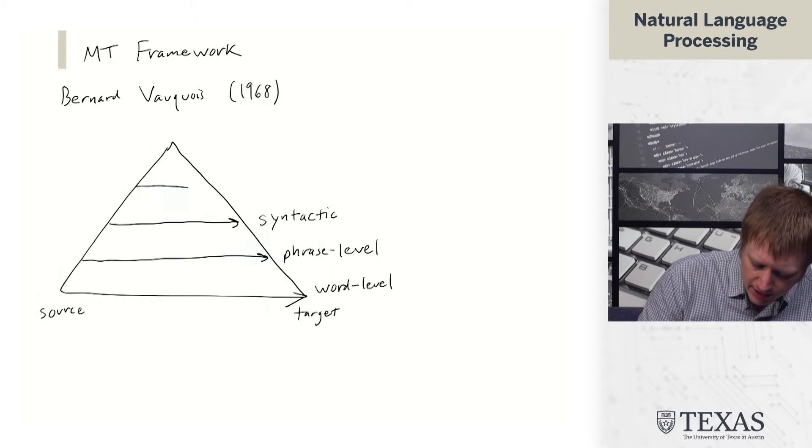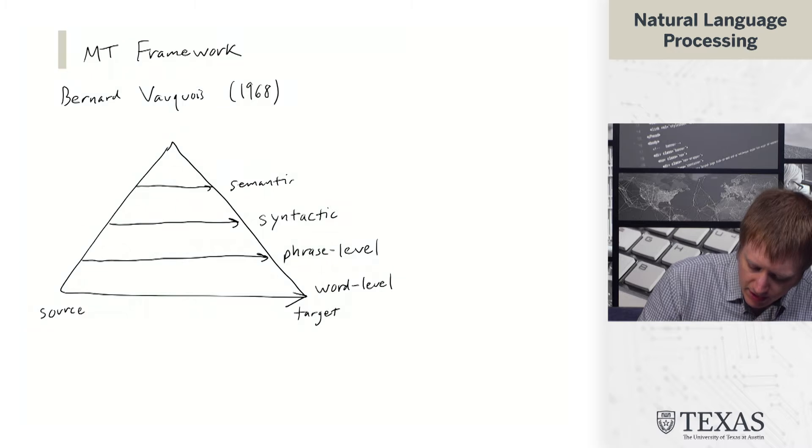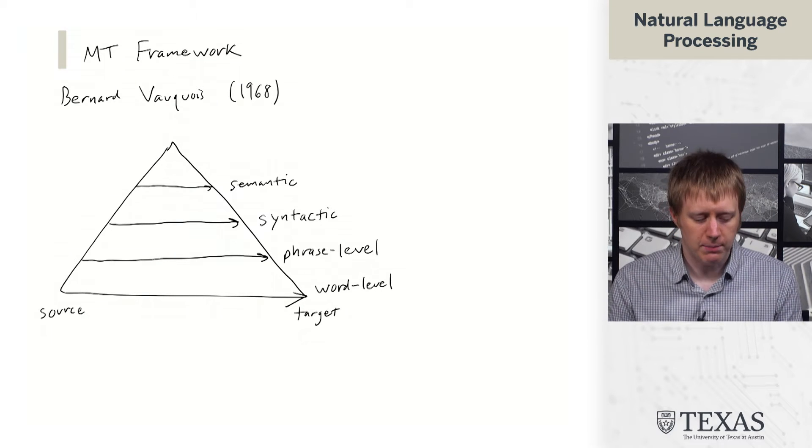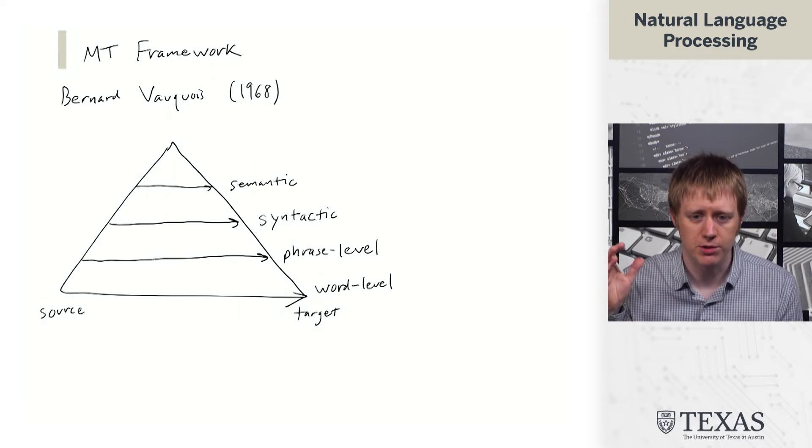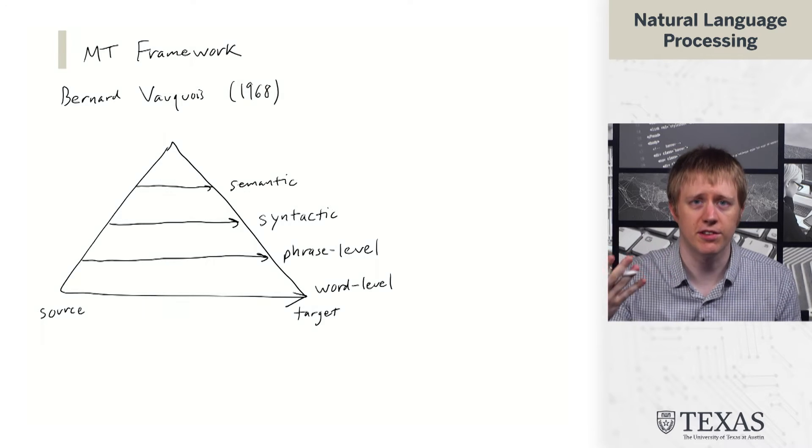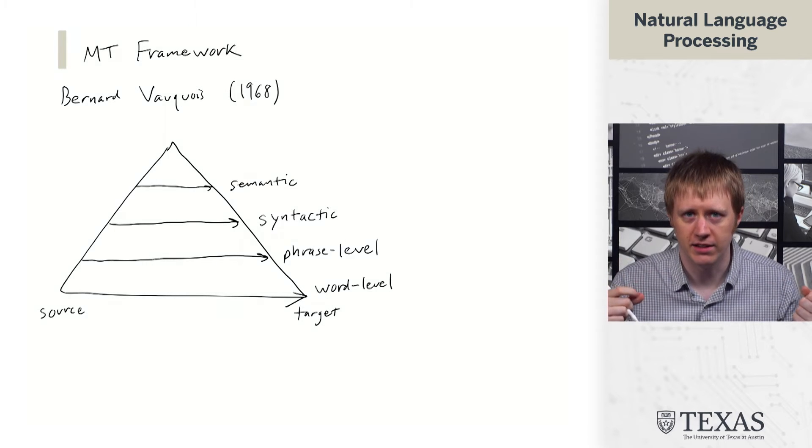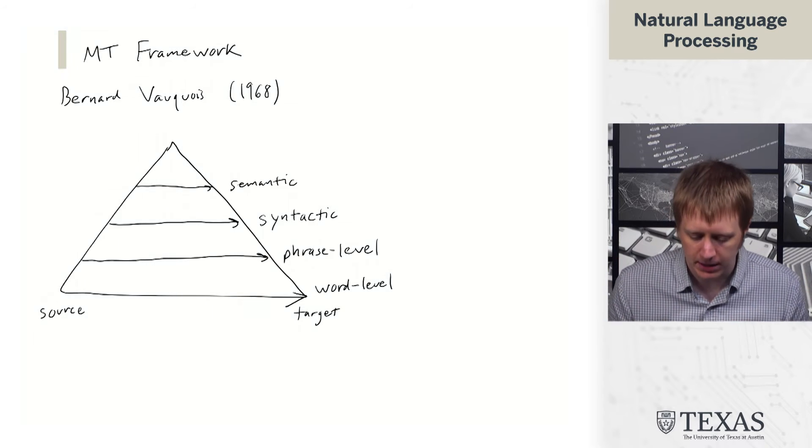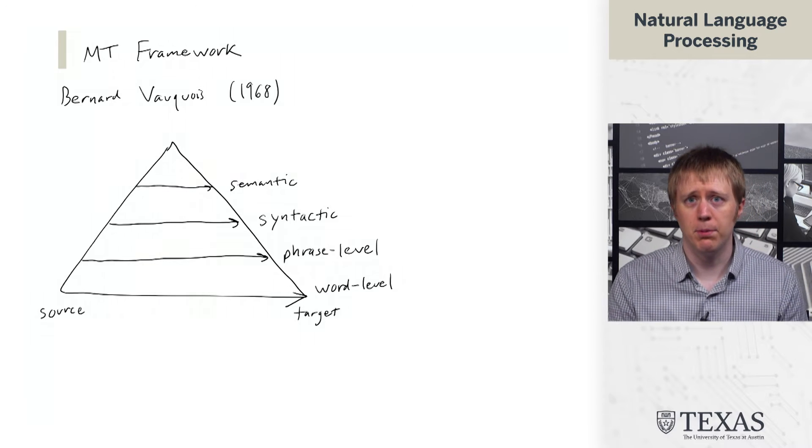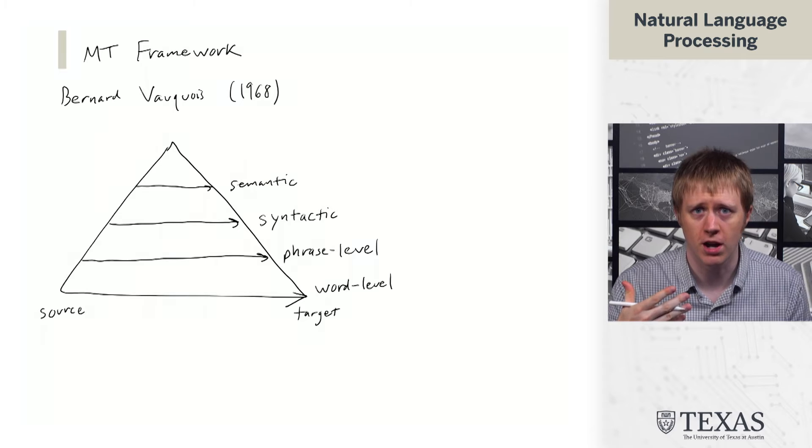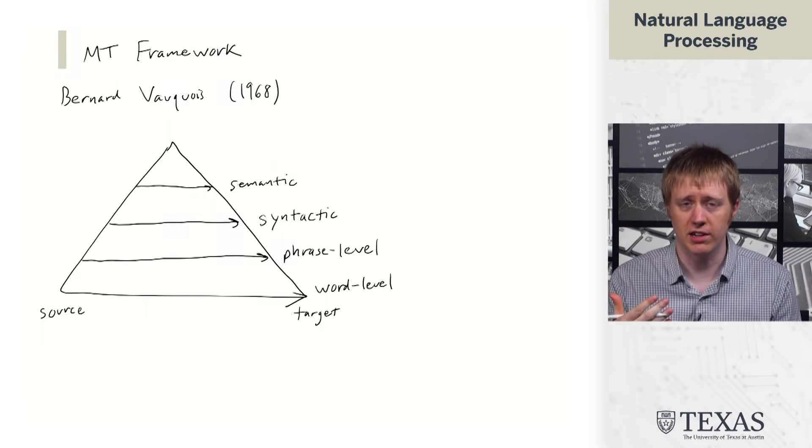And then the layer above that is the semantic layer. So here we think about maybe we want to have some sort of understanding of the semantics of an utterance and use that to achieve this mapping. For example, we could think about the lambda calculus expressions we saw when we talked about question answering and semantic parsing.